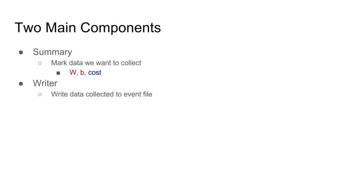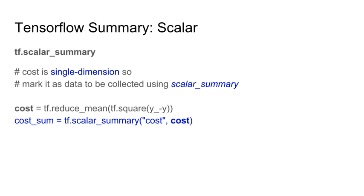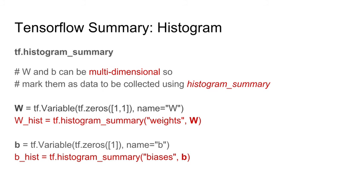We will now look at TensorBoard. TensorBoard has two basic components: summary and writer. We use summary to mark data we want to collect and visualize — in this case w, b, and cost. To collect data for cost, we define a variable and assign it to tf.scalar_summary; it is scalar summary because cost is single dimension. For w and b, which can be multi-dimensional, we use histogram_summary.